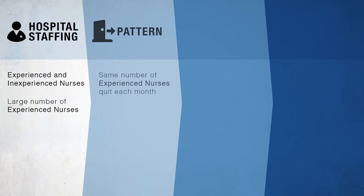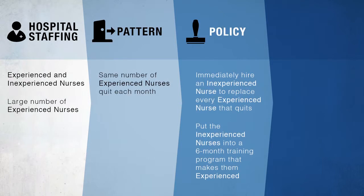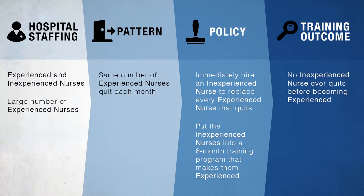Consider yourself in charge of managing the nursing staff at a hospital. Here's how staffing works: there are two types of nurses, experienced and inexperienced. There is a large number of experienced nurses, and for as long as you can remember, the same number of experienced nurses have quit each month. Your hiring policy is to immediately hire an inexperienced nurse to replace every experienced nurse that quits. You put the inexperienced nurses into a training program that always makes them experienced in exactly six months. Your training is so good that no inexperienced nurse ever quits before becoming experienced.